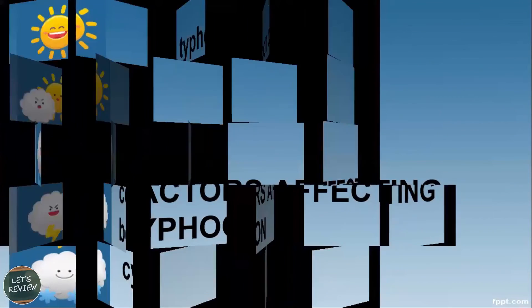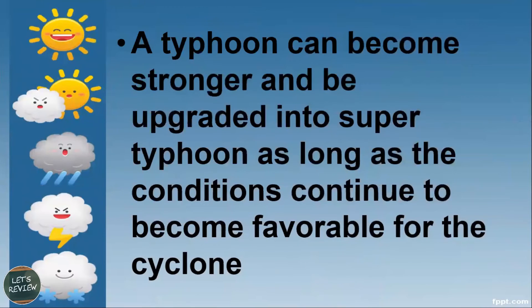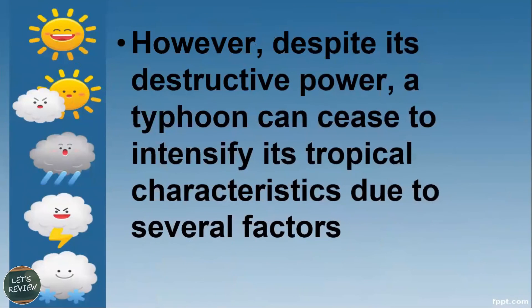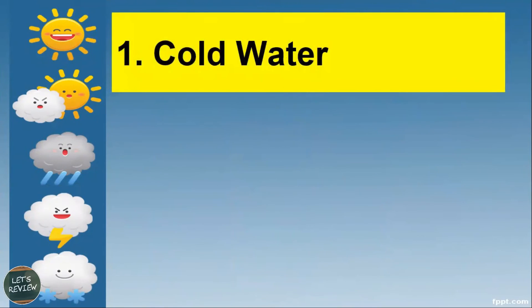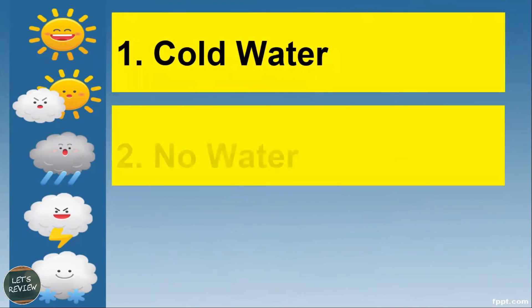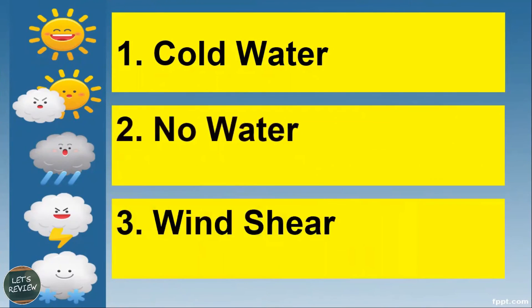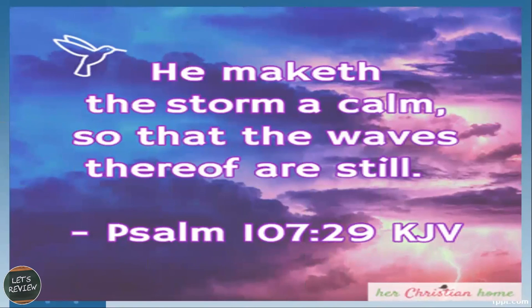A typhoon can become stronger and be upgraded into a super typhoon as long as conditions continue to be favorable for the cyclone. However, a typhoon can cease to intensify or lose its tropical characteristics due to several factors, such as encountering cold water, lack of water, or strong wind shear.